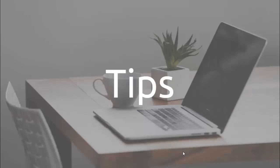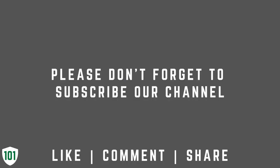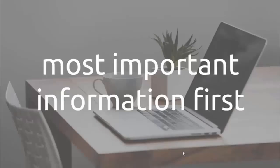Here are some tips. Start with the most important information first, because only the first two or three sentences of your overview are visible in search results. At the end of your overview, you can include soft skills related to your area of expertise such as reliable, good communication skills, fast learner, attention to detail, etc.